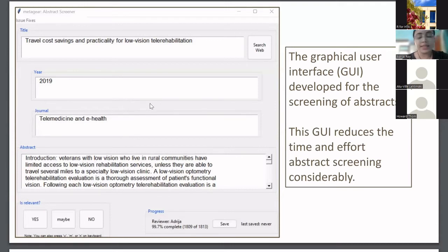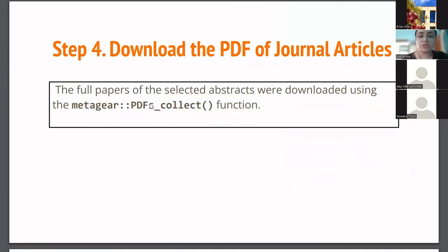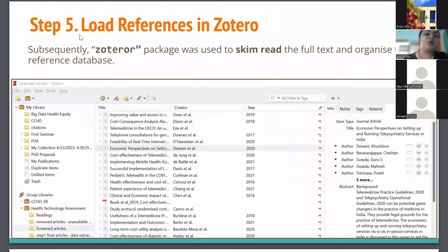There were certain maybes, and those were resolved by a fourth reviewer to avoid bias. The final step was to download the PDFs of the journal articles — the full papers of the selected abstracts — using the pdf_collect function in MetaGear. We finally found the list of journal articles to move on to skim reading. Then we loaded the references in Zotero.